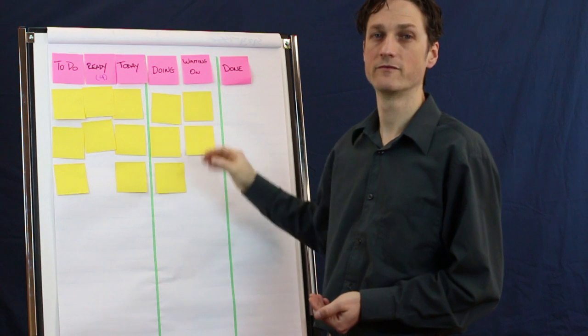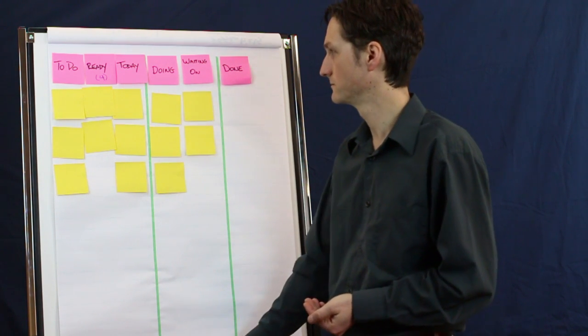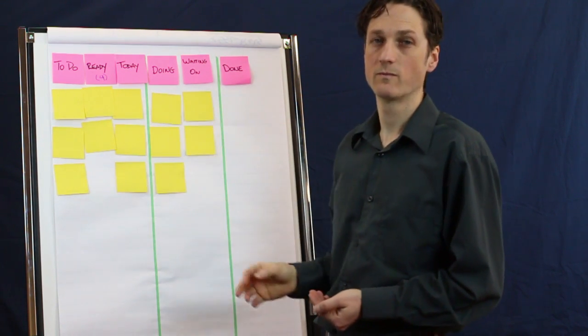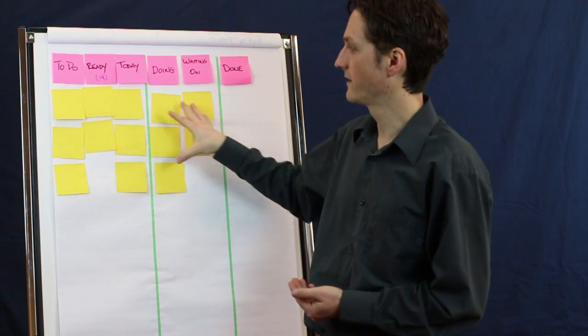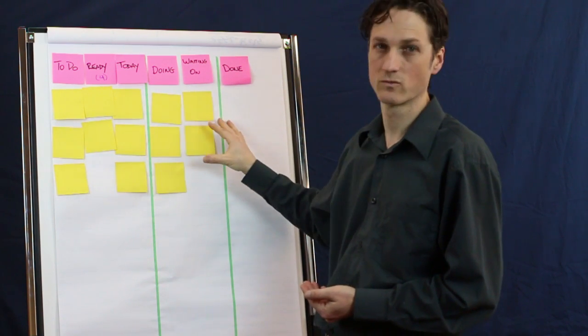Okay, so now we're getting a lot more visibility into our workflow. Now that we have this approach, we can further add clarity in all of our work items. You see they're all just one color.